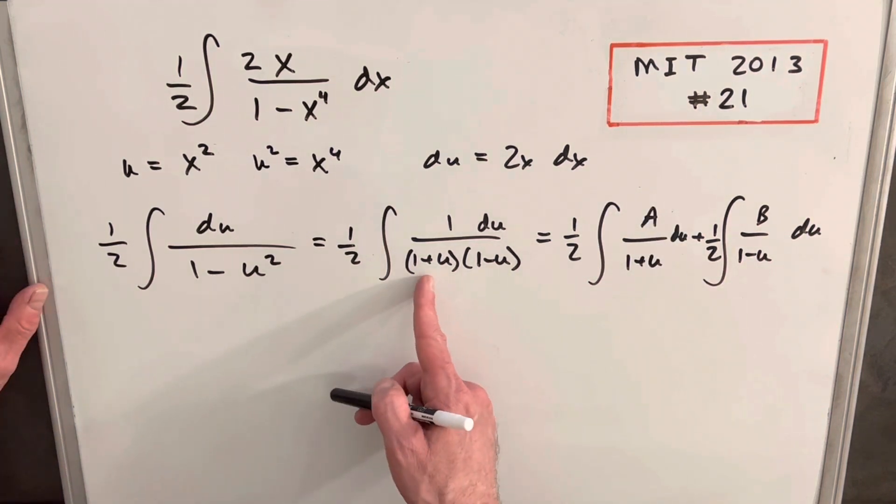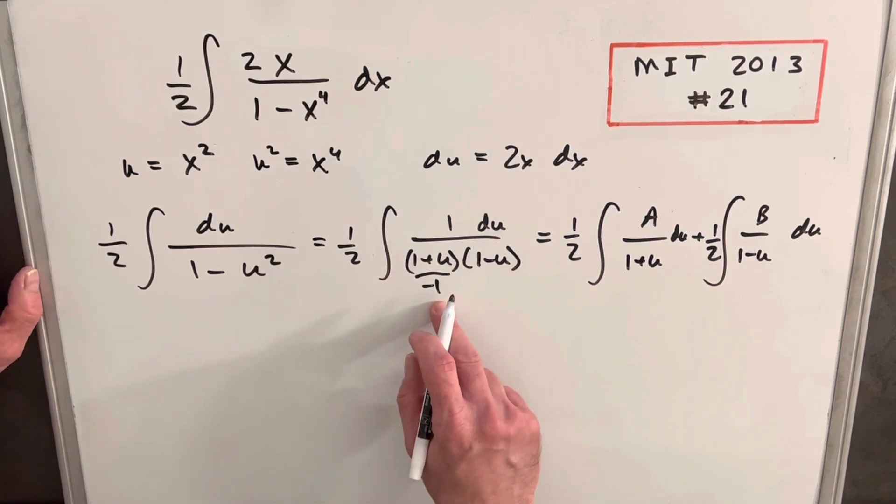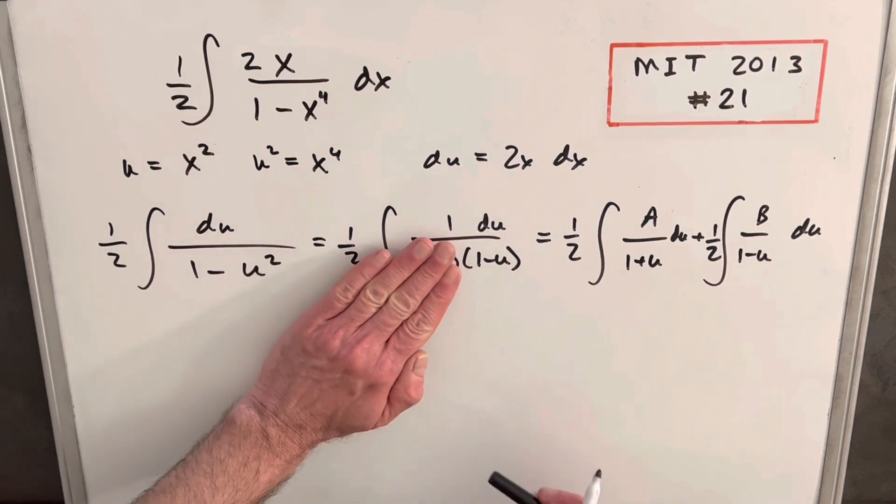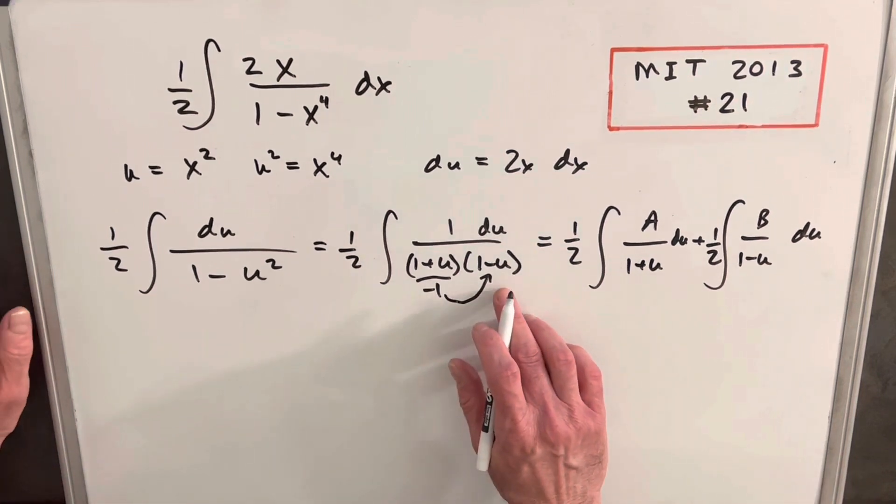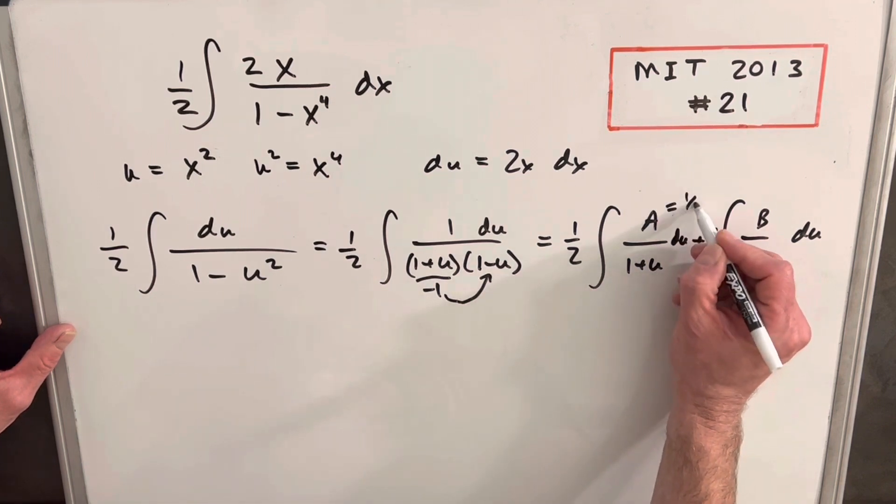So in this cover-up method, we're going to look at these terms separately. So we look at this first term, and then we notice if we plug a minus 1 in there, we get a 0. We don't want to divide by 0, but we'll just kind of cover that up. Now if we take this minus 1 and plug it in over here, 1 minus minus 1, that's going to be a 2, so we get a half. This is going to correspond with our first term, so our A is going to be a half.